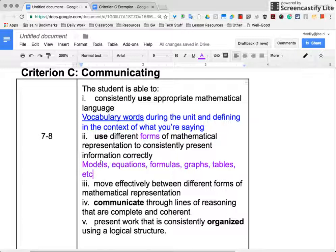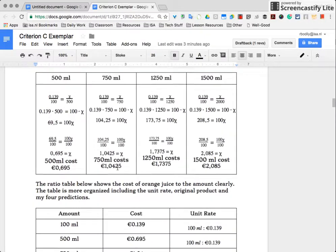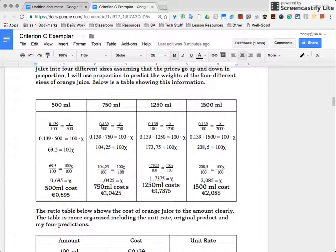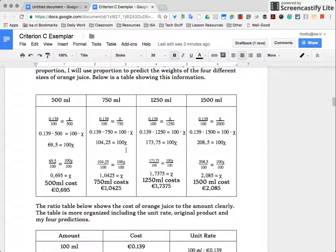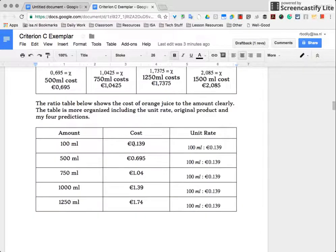Forms would get you a seven or eight. In year three, that could look something like this: I see a nice organized table, I see equations here, I see organized information. All of these things are really nice forms of mathematics.